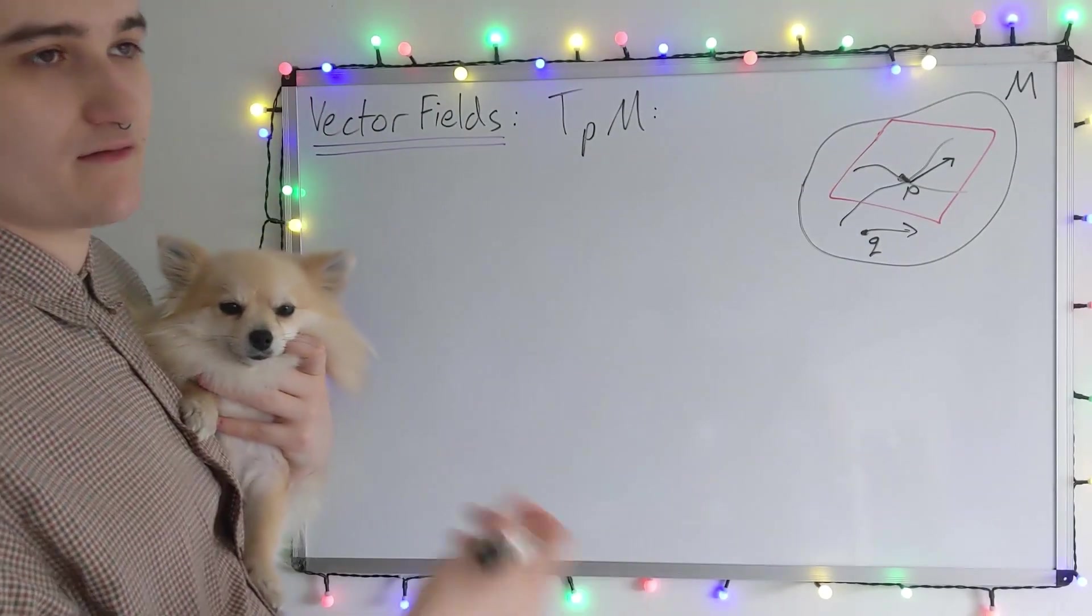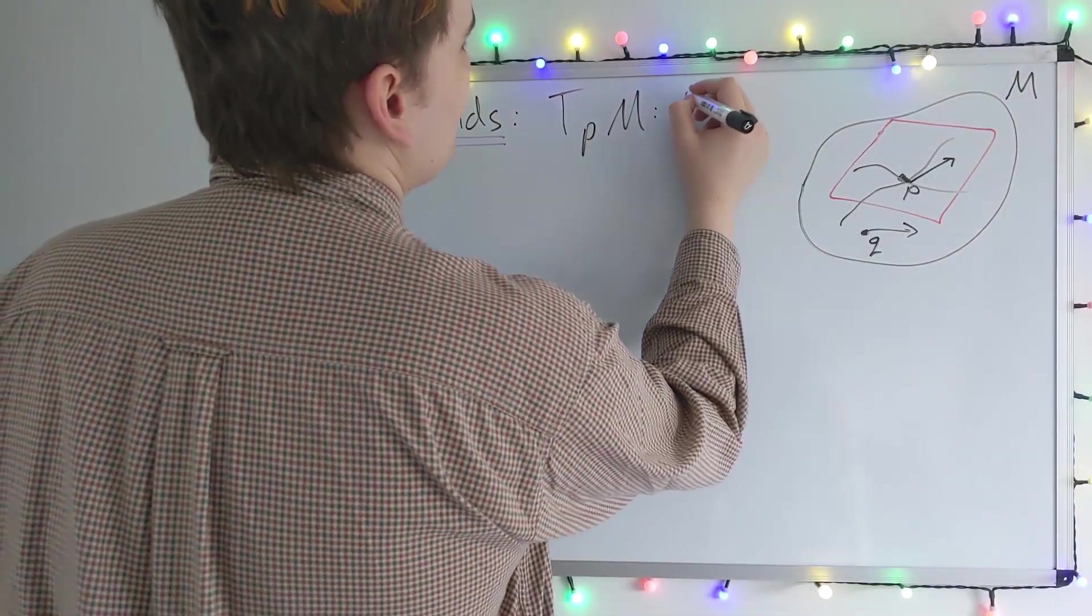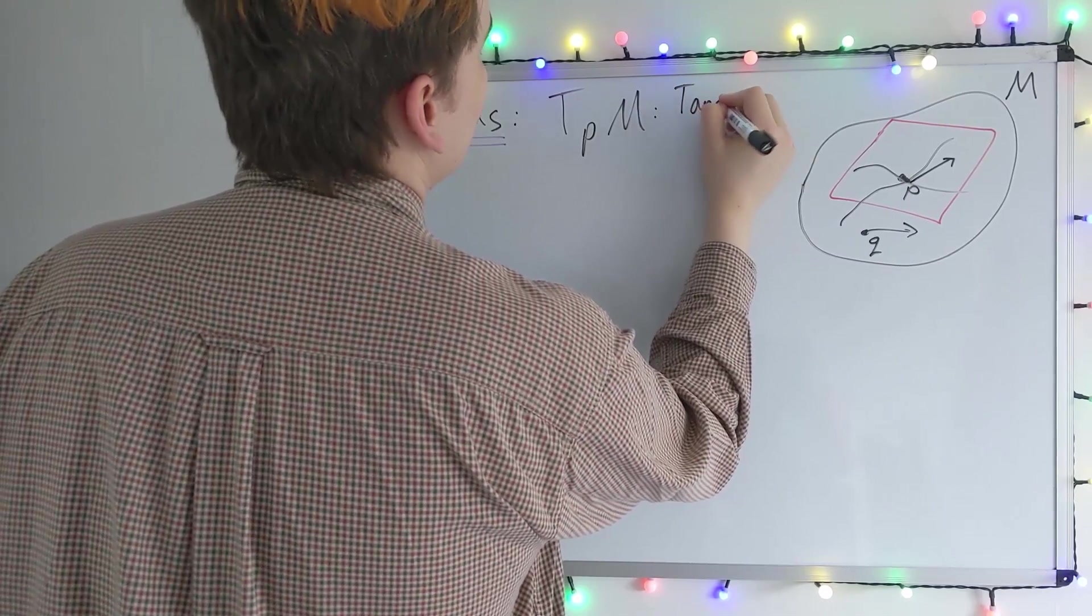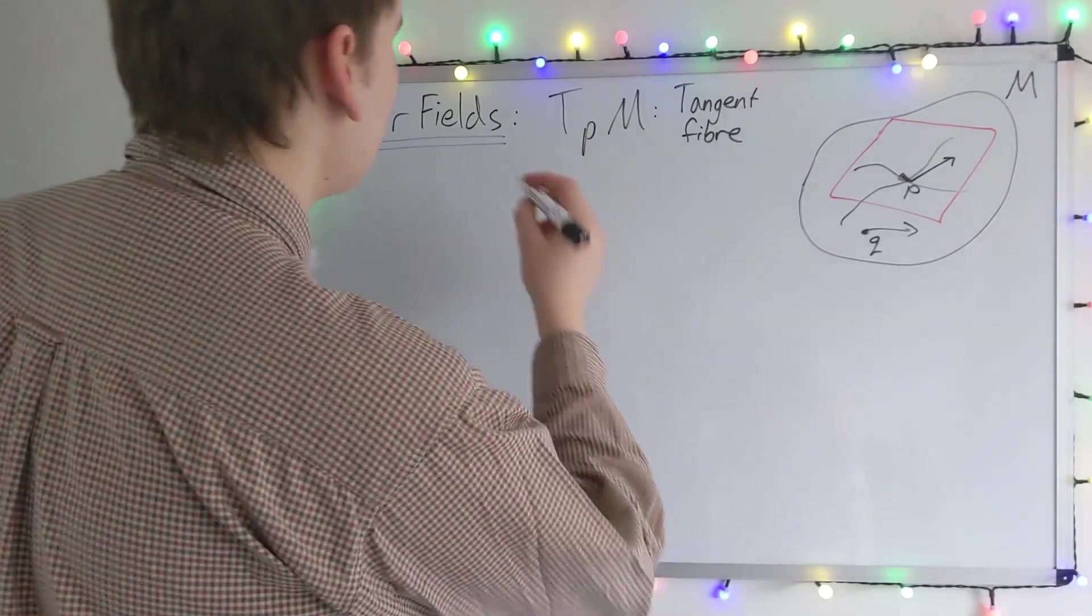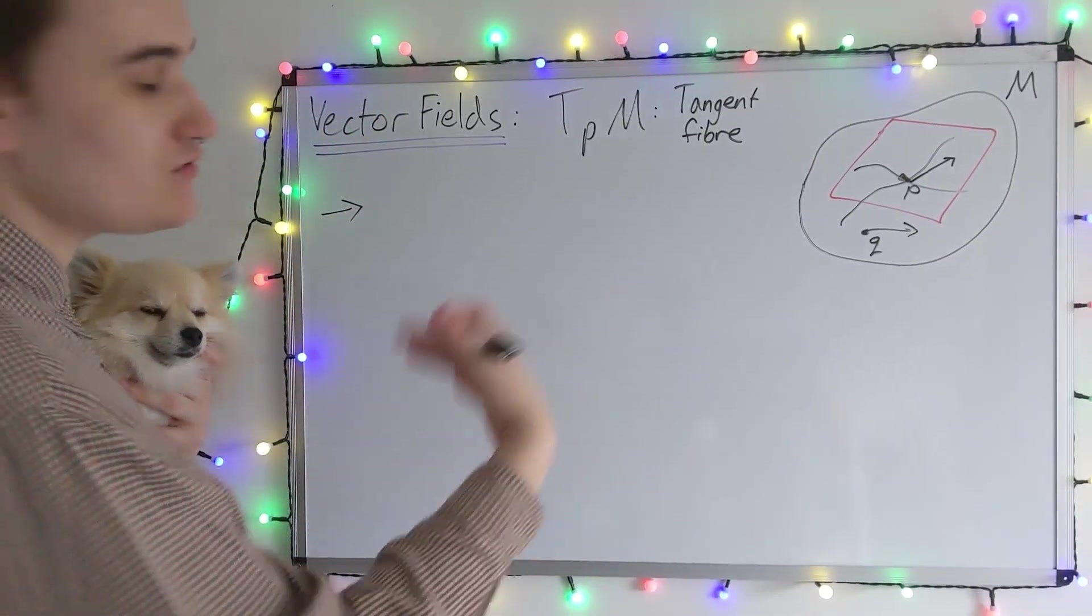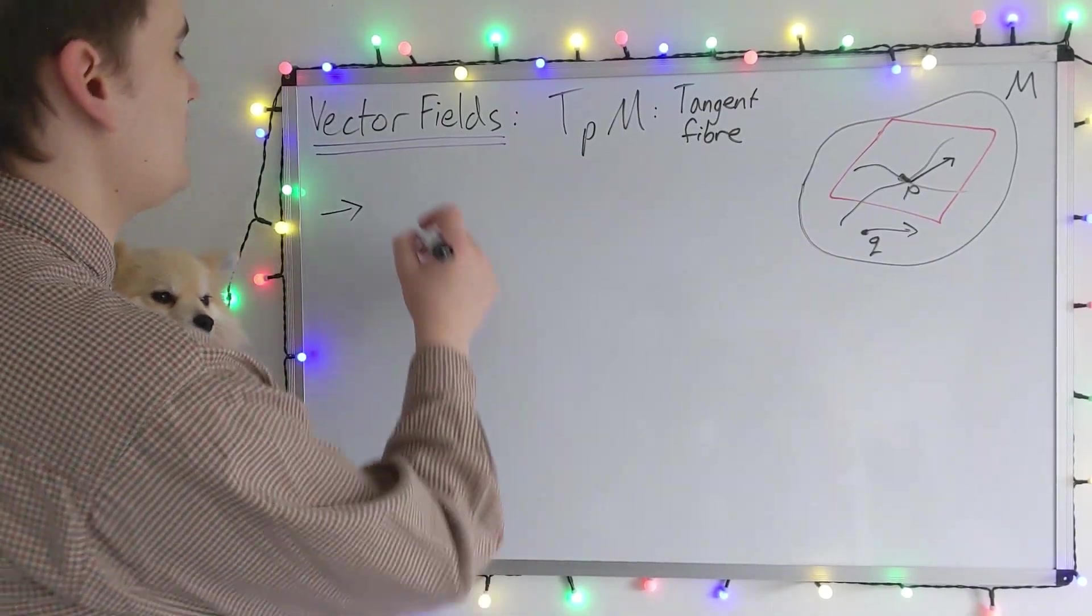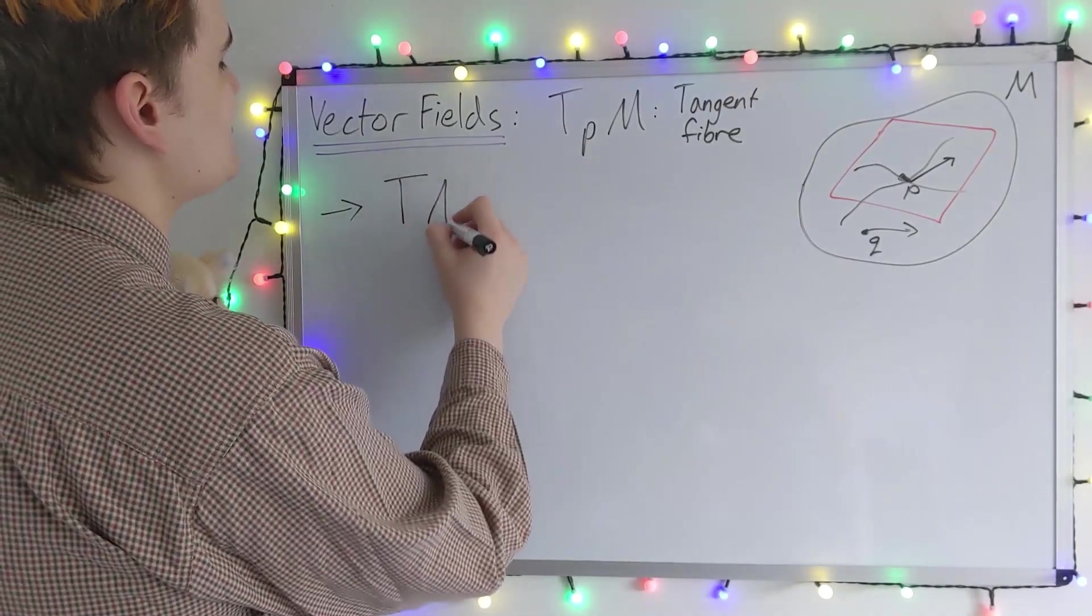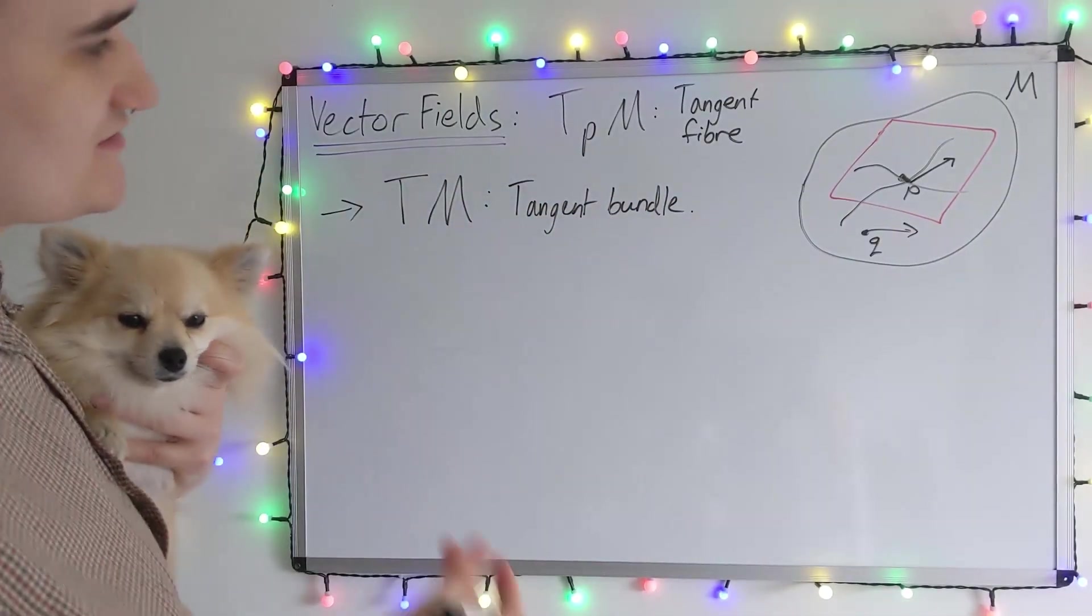We start by defining the tangent space at each point. I'll give some terminology that's sometimes called the tangent fiber. The tangent space at each point is called the tangent fiber. And then we consider the collection of all such tangent fibers or effectively take their union. We're formed the tangent bundle.